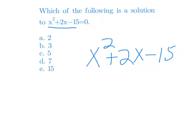5 squared plus 2 times 5 minus 15. Does this equal 0? Spoiler alert! No, it does not. It equals 20.